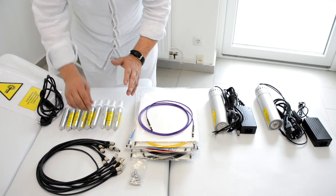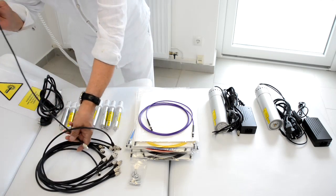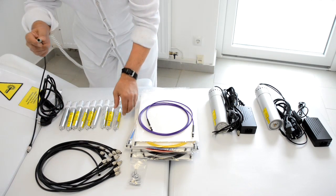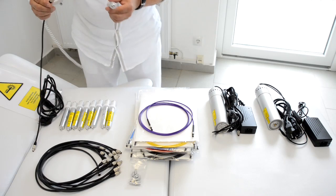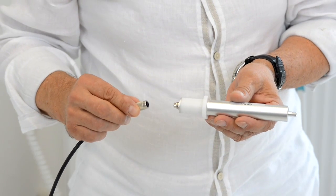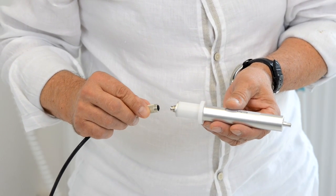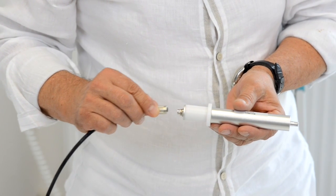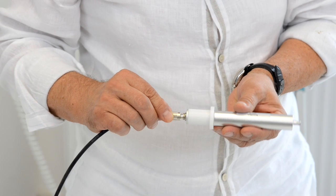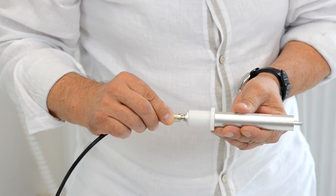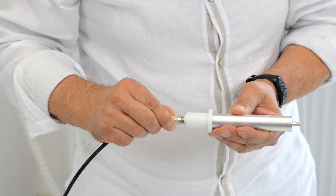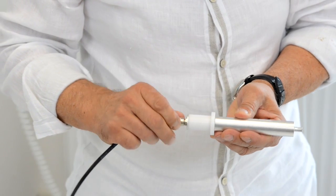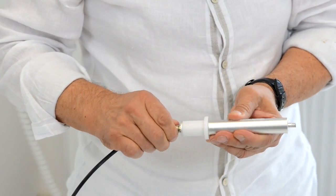In the next step we have to connect the cables, the power supply cables to the laser model. This is a green laser model and you have to connect the cable very carefully, not with much pressure. First you set it here, turn slowly and then it's going inside and then you can fix it by turning.